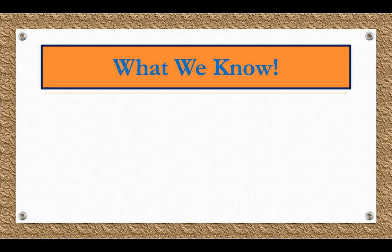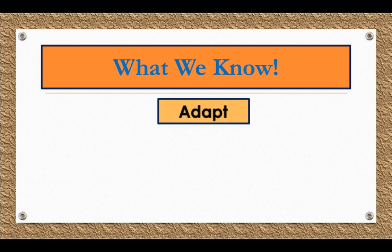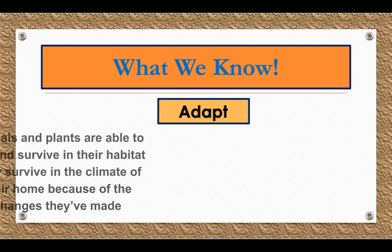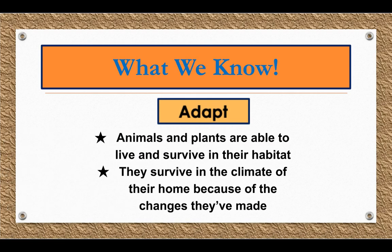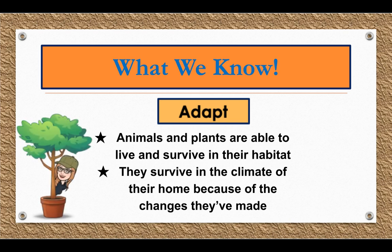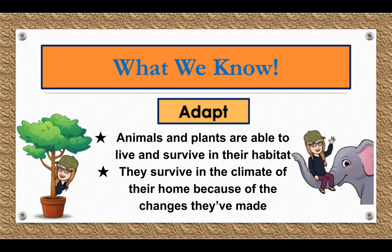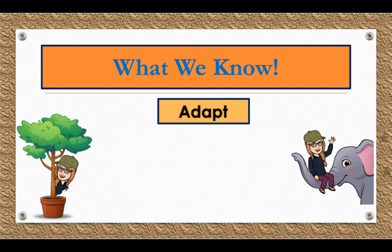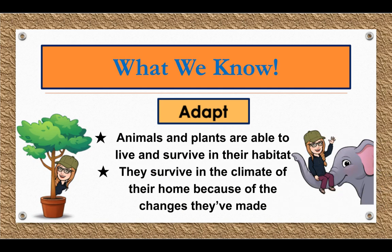Let's review what we know. We've learned all about the word adapt. Animals and plants are able to live and survive in their habitat because they adapt. They survive in the climate of their home because of the changes they've made.